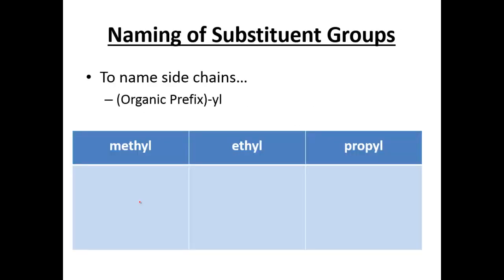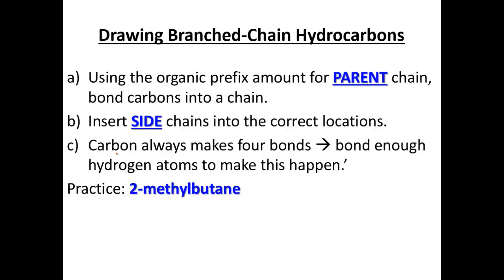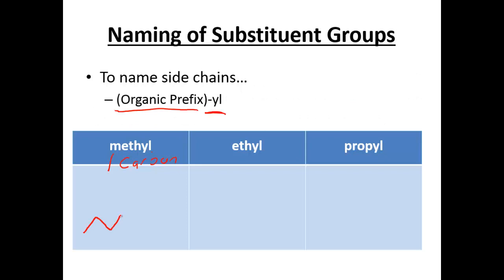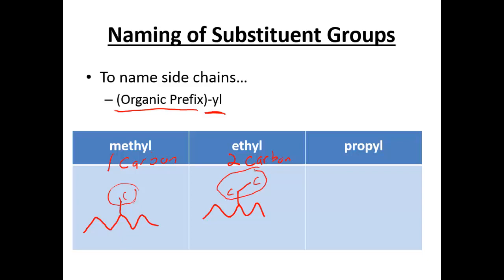The three substituent groups we're going to deal with are all going to use organic prefix naming and then end in -yl. One carbon is going to be called our methyl group. For example, if we have a carbon chain and then branch off just one carbon, that would be our methyl group. If we have two carbons, that's going to be known as an ethyl group — one, two carbons — and that part would be the ethyl group.